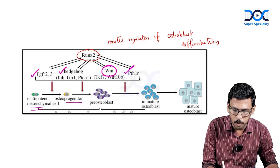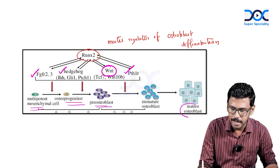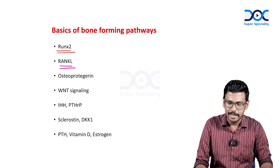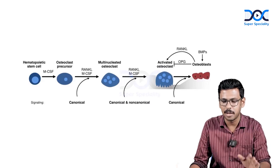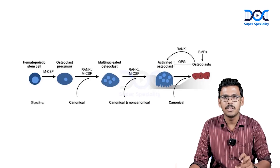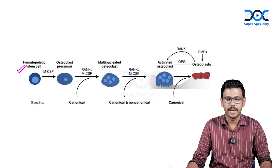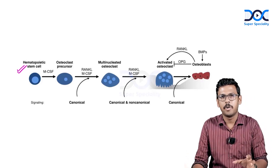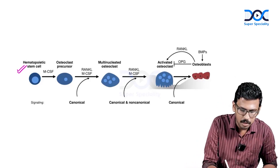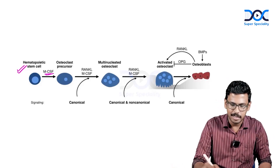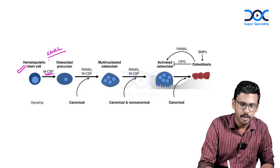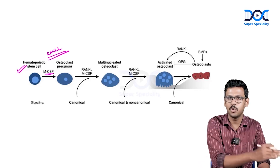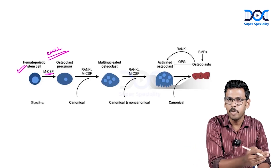RUNX2 activates these pathways, stimulating differentiation of mesenchymal stem cells into osteoprogenitor, pro-osteoblast, and finally immature and mature osteoblasts. Regarding RANK ligand: osteoclasts derive their origin from hematopoietic stem cells, acted upon by certain growth factors like monocyte colony-stimulating factor and RANK ligand. RANK ligand is the master regulator of osteoclast differentiation and activation — analogous to RUNX2 for osteoblasts.